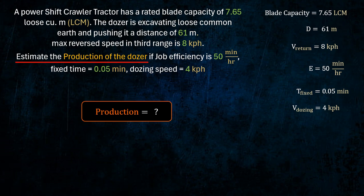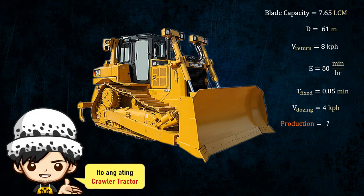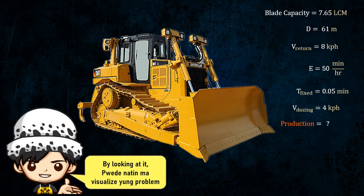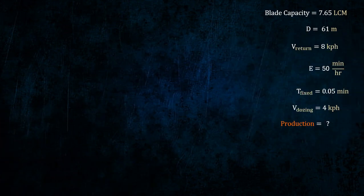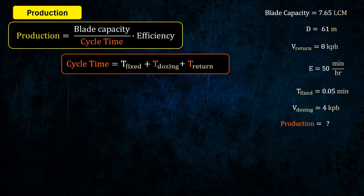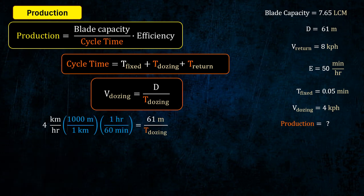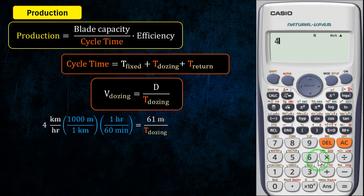Calculating production using cycle time. Dozing speed assessment — speed: 8.